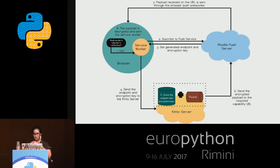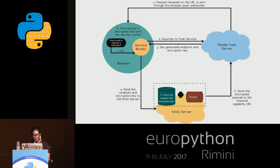Once the service worker receives these, it needs to send them to the web application server — which I'm calling the Kinto server in this use case — saying this is where you can reach out to me. The web application server stores the endpoint and the encryption keys.